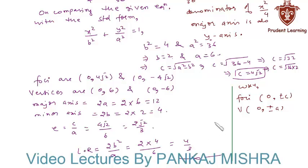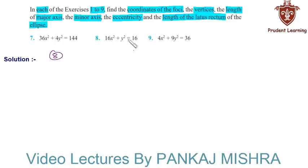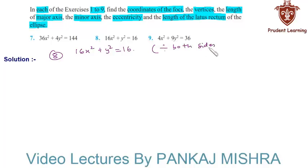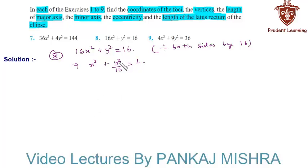This completes our solution. Let us see the 8th problem. In question 8, the given equation of the ellipse is 16x² + y² = 16. Dividing both sides of this equation by 16, we have x² + y²/16 = 1.